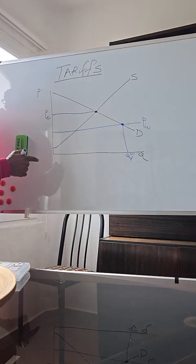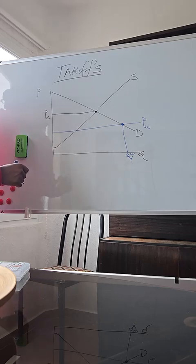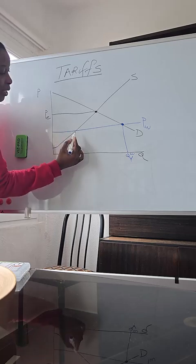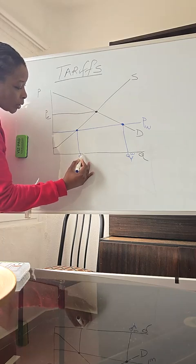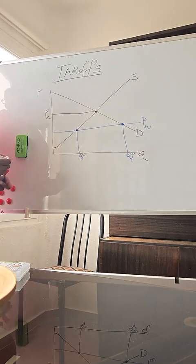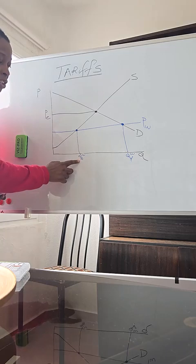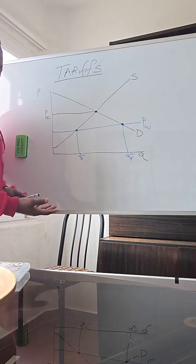This is our demand and this is now the new lower price. We're going to demand more of this good. Let's call it QDW for the world. Now when the price is lower, think of it from the domestic suppliers. They now face competition and the price they can fetch is now lower. So are they going to want to produce and sell more of that good or less of it? It's going to be less. This is the world price, this is now what the domestic suppliers are willing to supply.